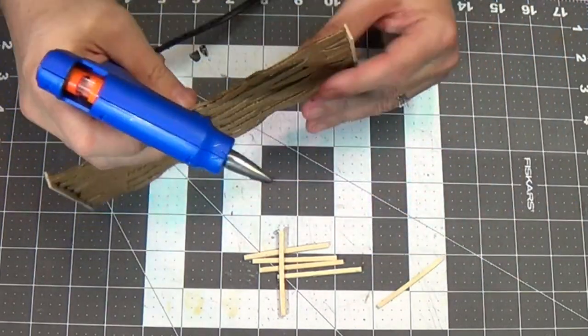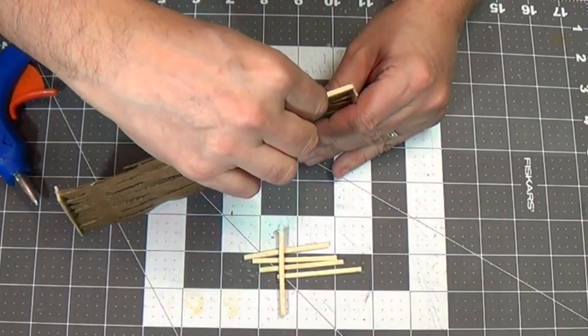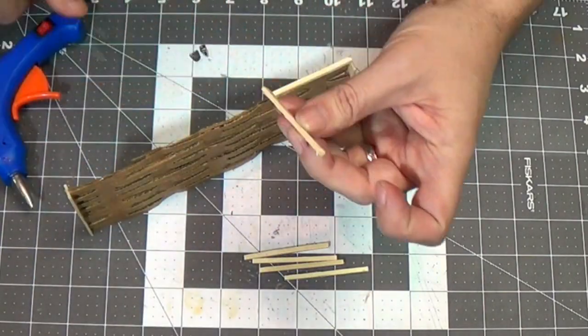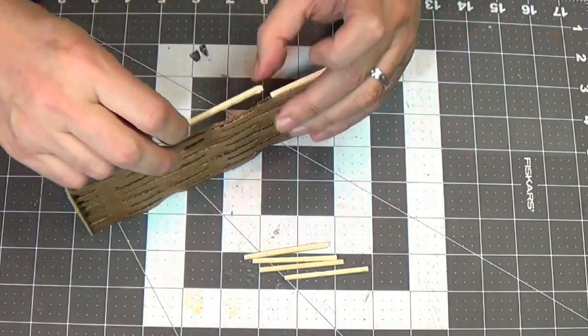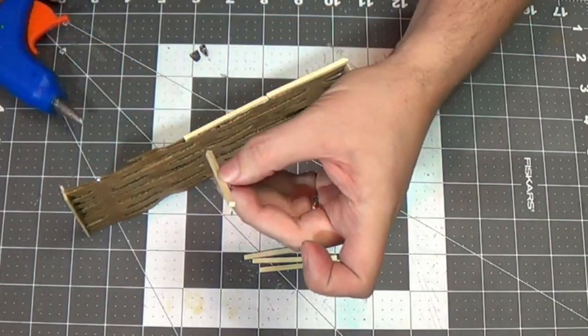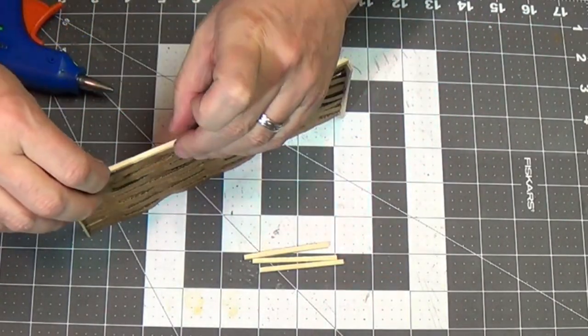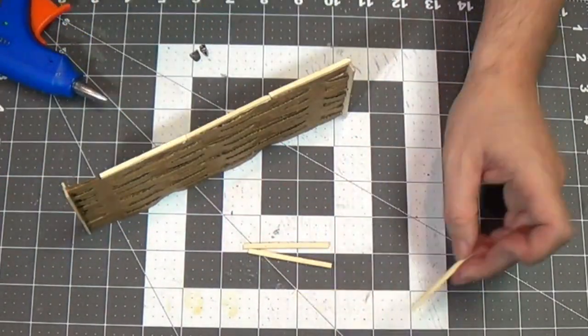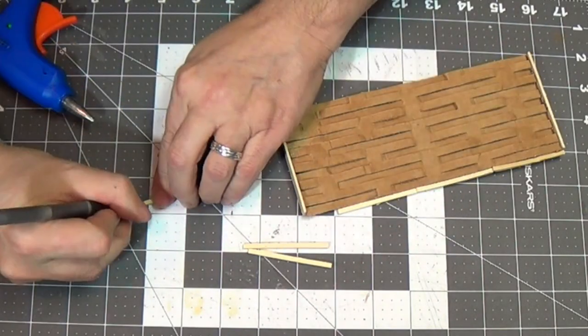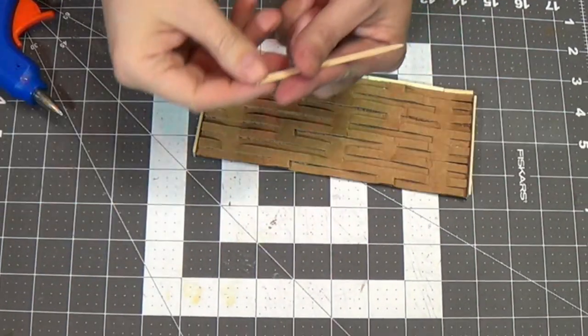Now I'm going to use these match sticks on the top, and this will help strengthen the top. So just super easy to do. Put them across the top there, and I'll cut that one off the end there.